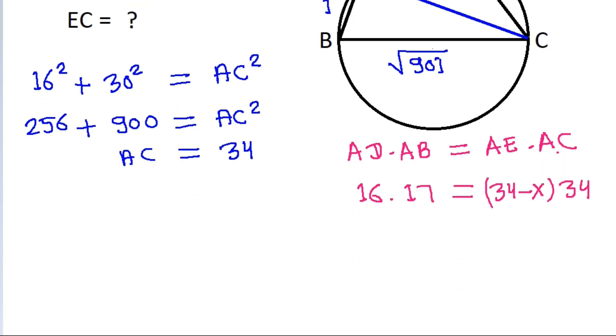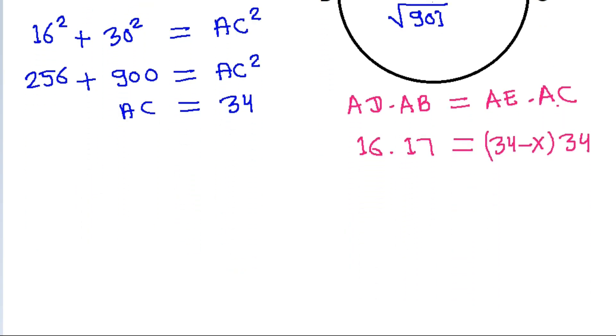And now 17 times 2 is 34, and 2 times 8 is 16. So we get 8 is equal to 34 minus X, or X is equal to 34 minus 8, which is 26.